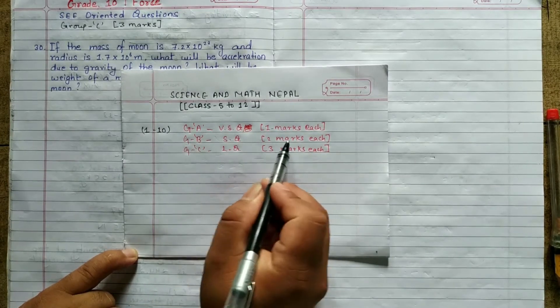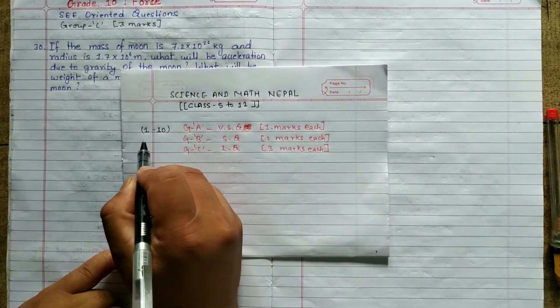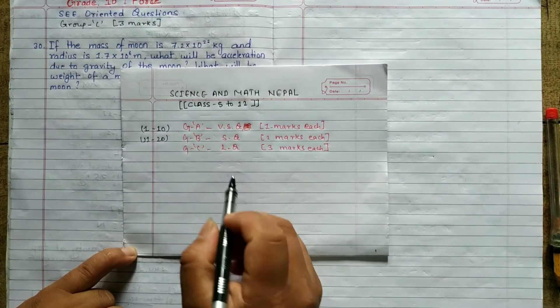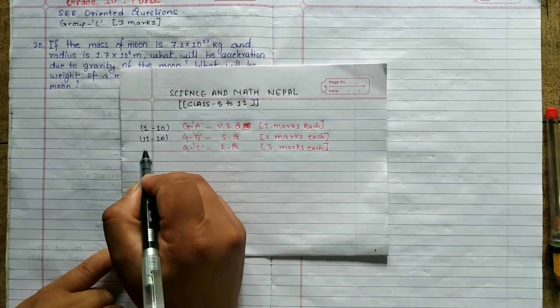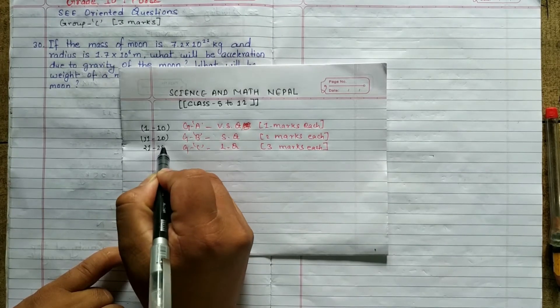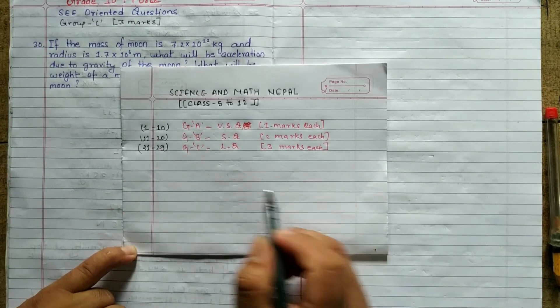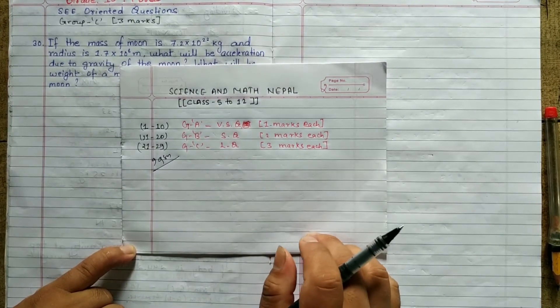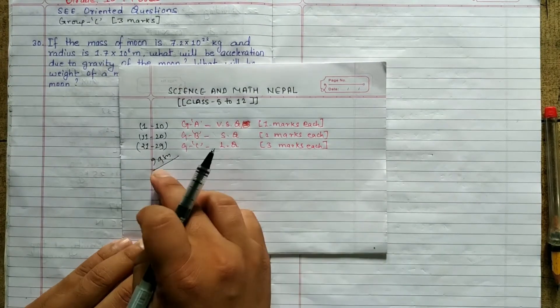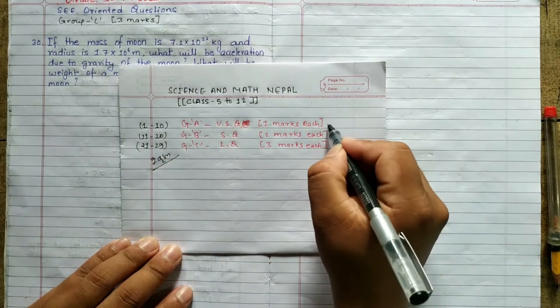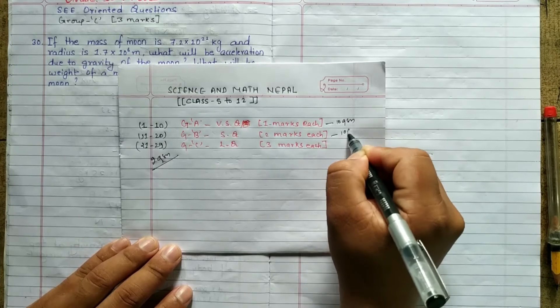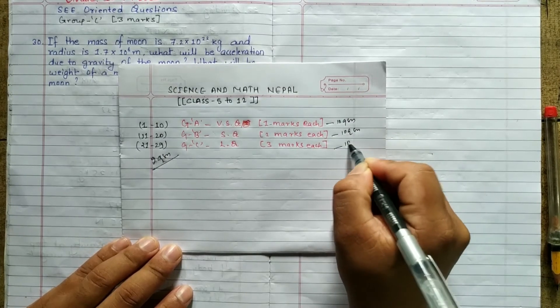Group B is short question, 2 marks each. We have a question of 10. We have a question here about 10 questions. This is the problem. Then we have a question about 1 mark. This is the problem. So these, you have to ask to solve the problem. We have to answer this problem. So these are the problems we have to ask.